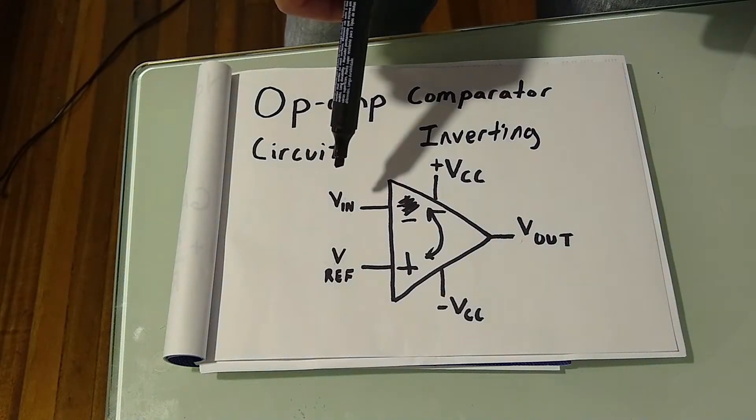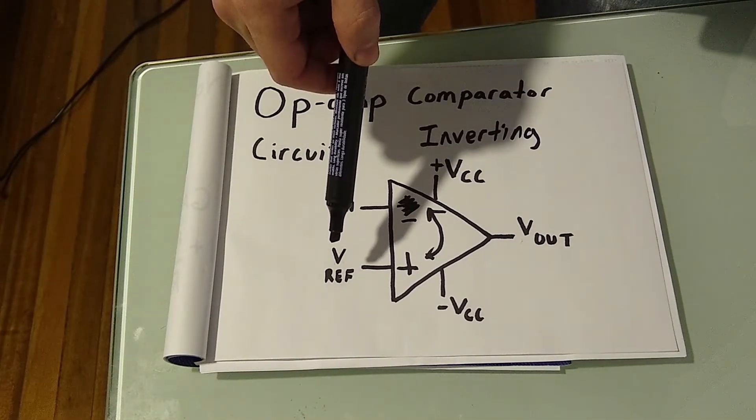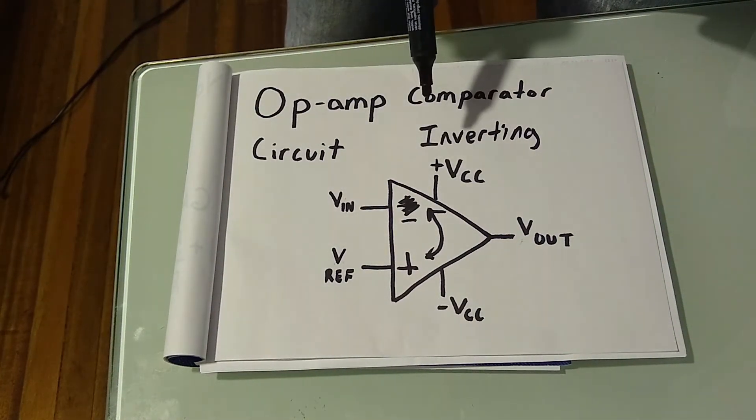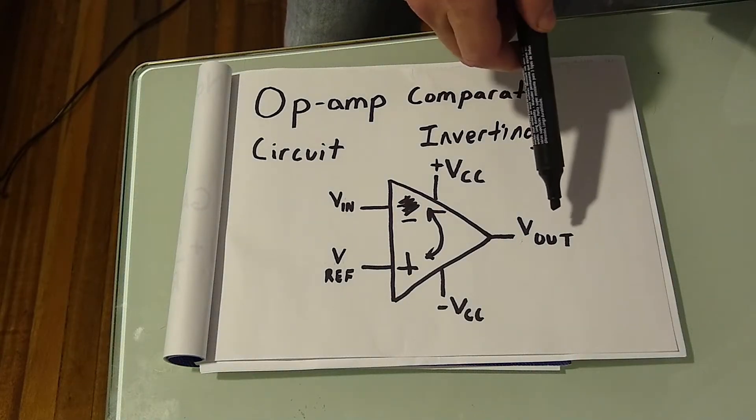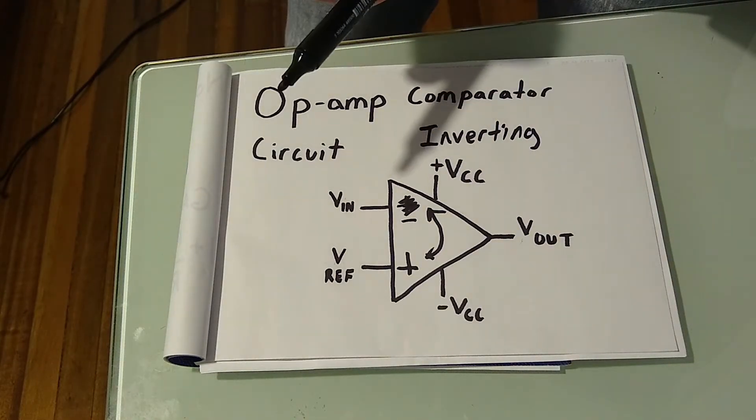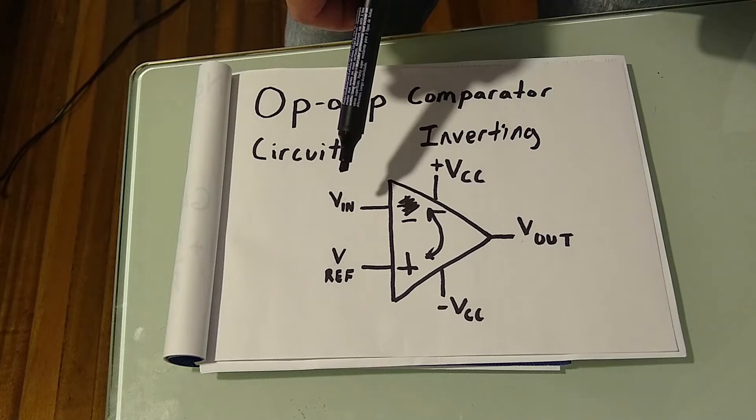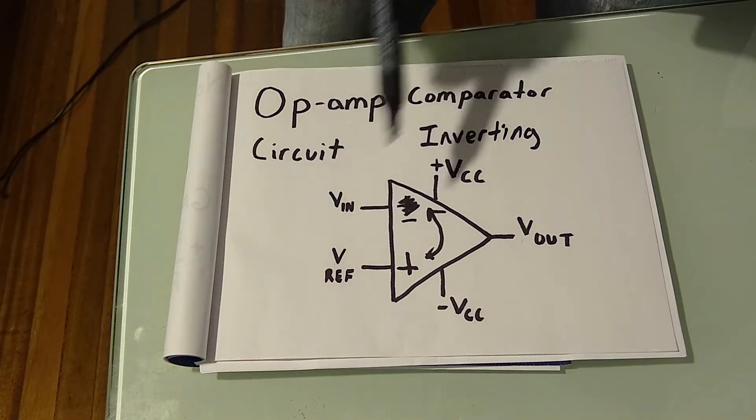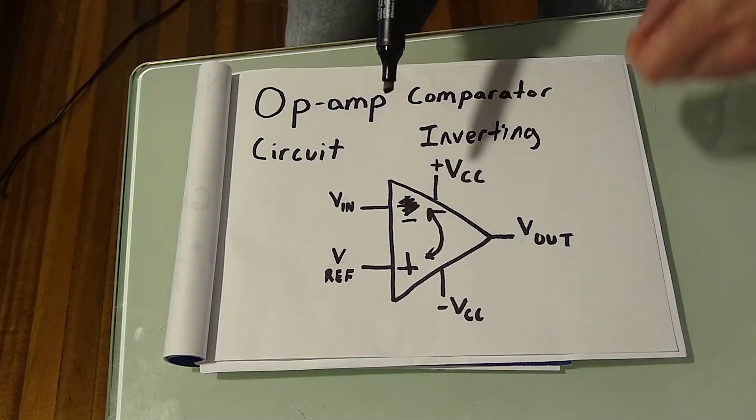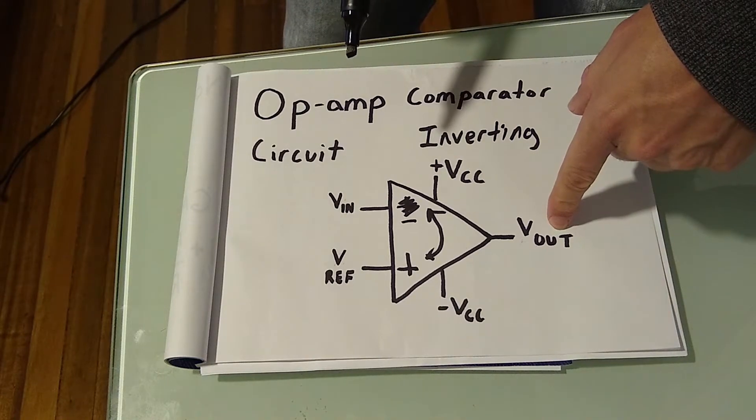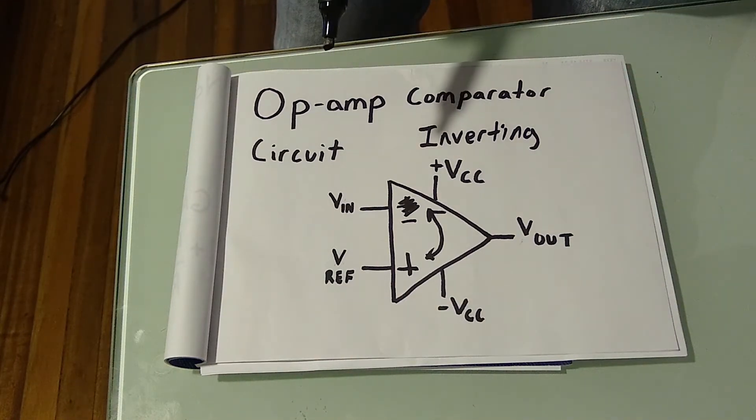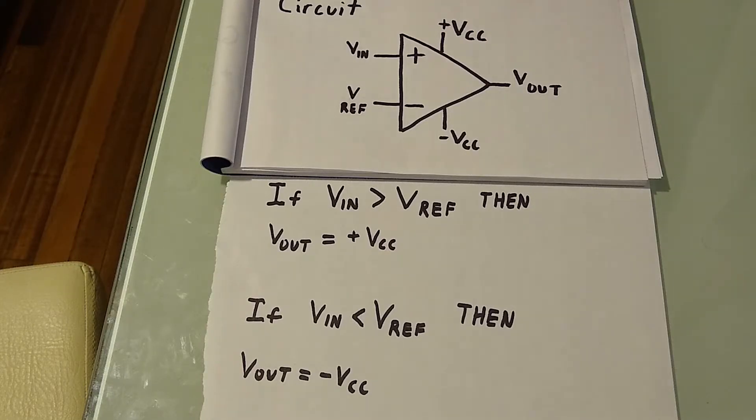So if your voltage in is greater than your voltage reference with a non-inverting circuit, your voltage out would be positive. But if your voltage in is greater than your reference voltage in an inverting circuit, your voltage out would be negative.